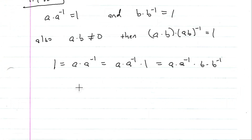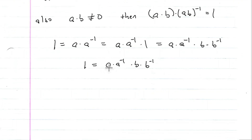Simplifying this string of equations, we see that one is equal to a times its inverse times b times its inverse. Since the real numbers are commutative and associative, we can commute a and b and associate them. So one is equal to a times b, times a⁻¹ times b⁻¹.